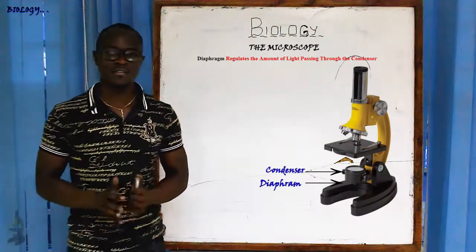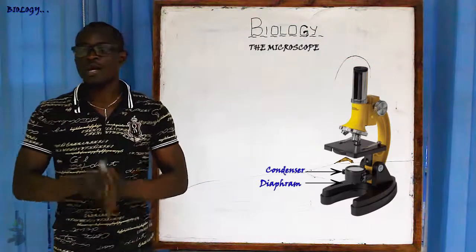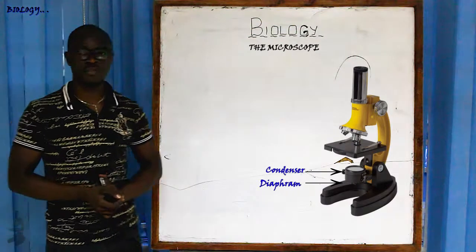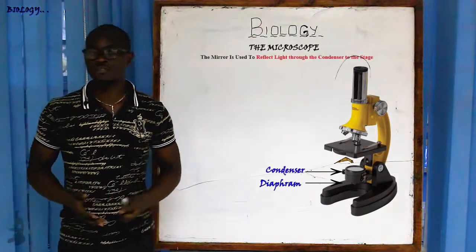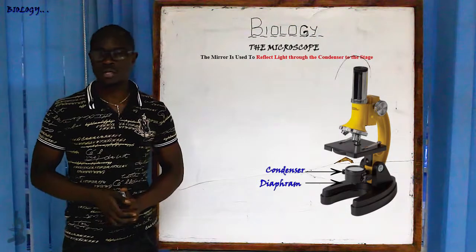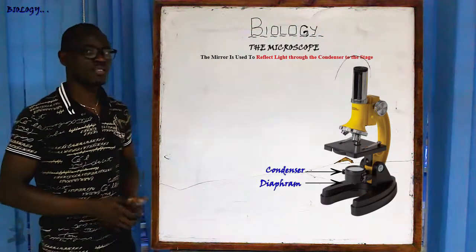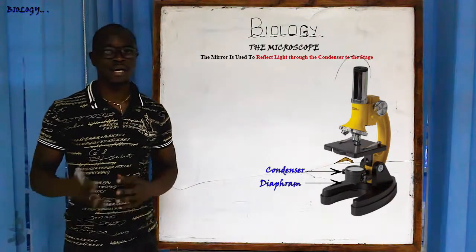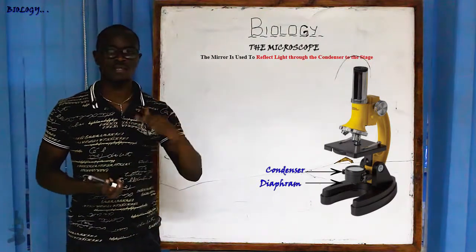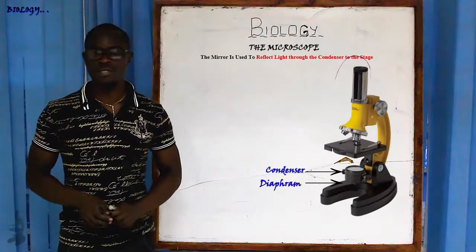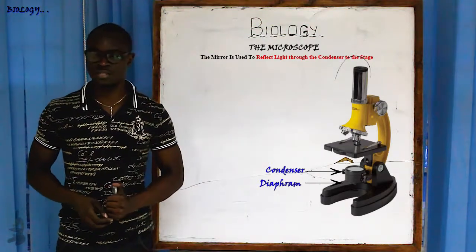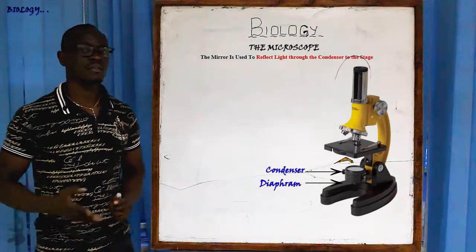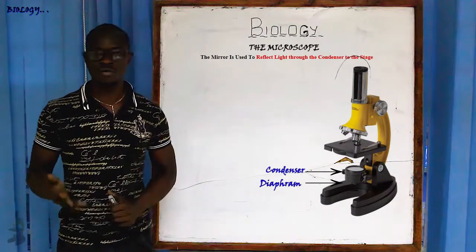We also have the mirror. The function of the mirror is to reflect light through the condenser and onto the stage. The best definition is that it reflects light through the condenser onto the stage.